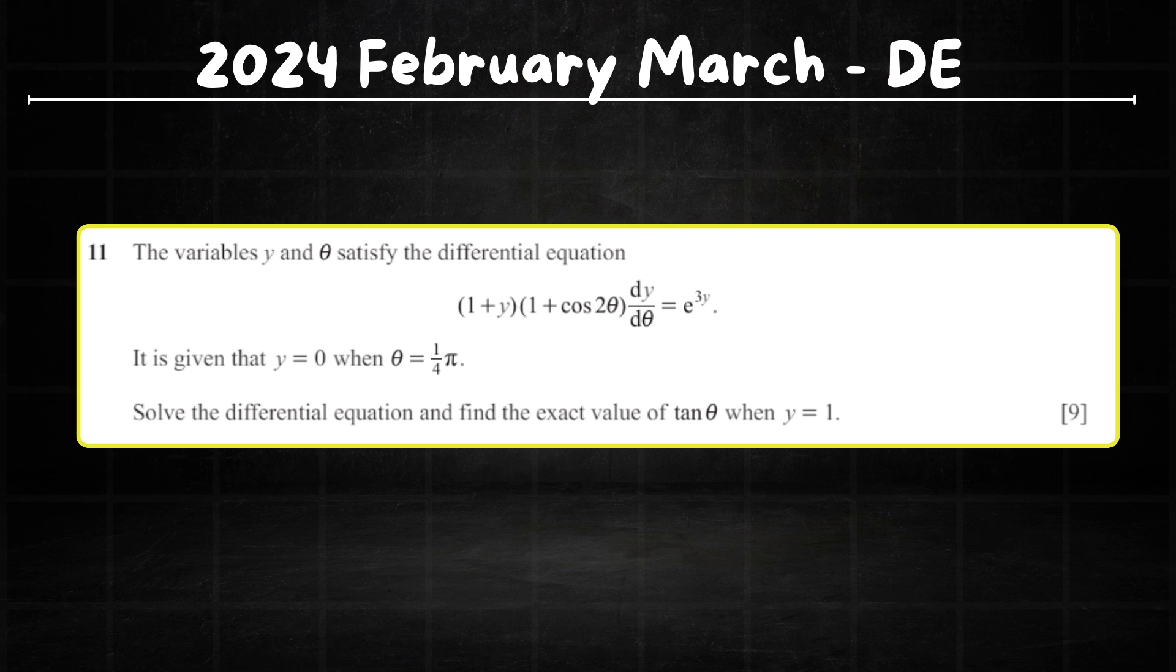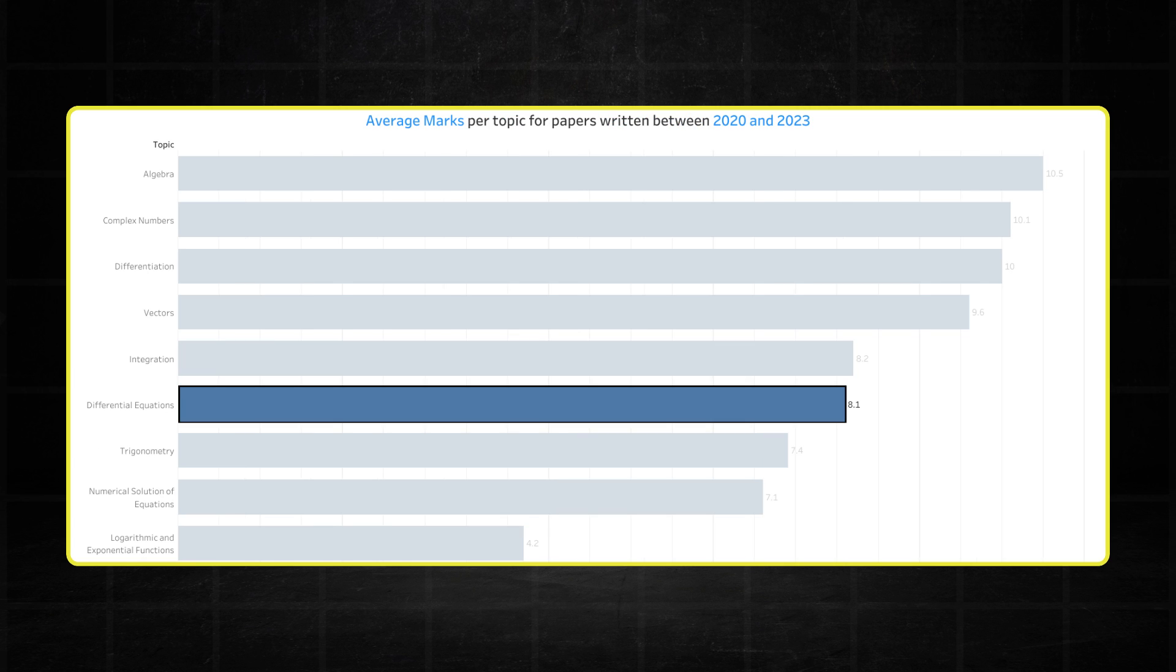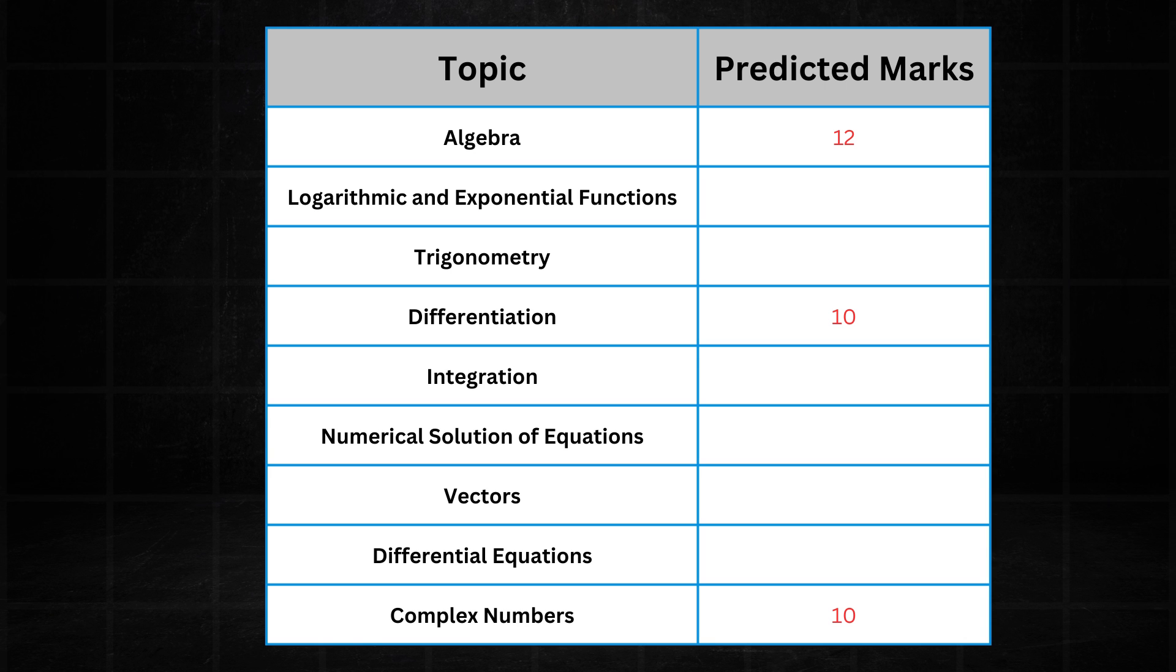The differential equations question in the February-March paper was a bit more challenging than usual, hence the ridiculous 9-mark showing. Most differential equations are around 8 marks, so I don't expect that to change in the May-June series. So I predict an 8-mark average for differential equations in the May-June series.